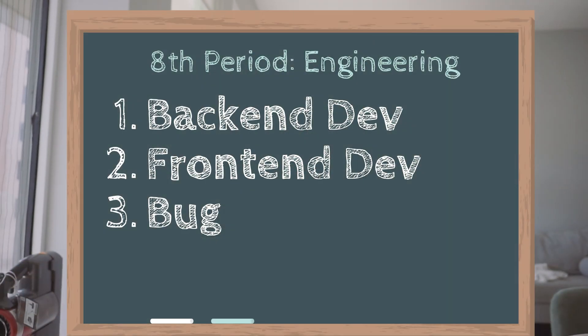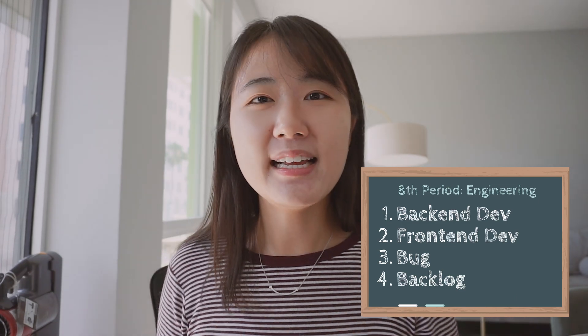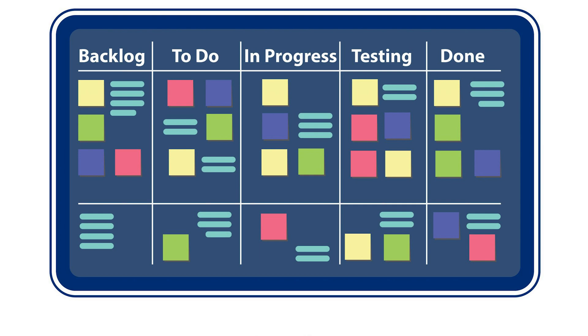A bug is a problem causing a program to crash or produce an invalid output. A backlog is a list of all the work that is due to be completed — like a to-do list for the team. An agile product backlog is a list of priority features. Product managers manage this backlog of features that need to be taken care of. The higher items are on the list, the more high-priority they are; the lower they are, the lower priority and can wait a bit.